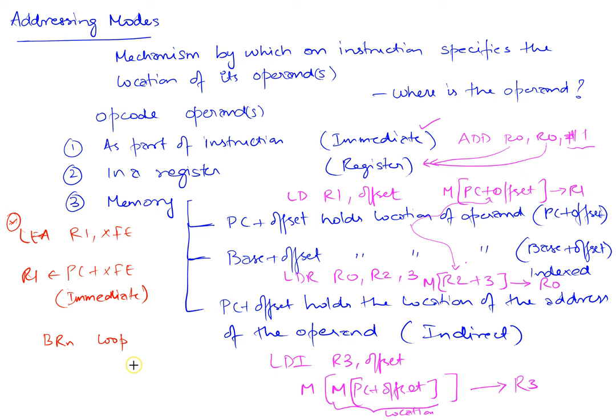What this does is it takes whatever the loop's address is, adds PC to it and sets PC to this value if the N bit is on or N bit is 1.